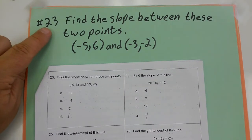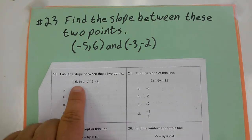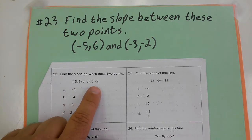Number 23 from the PERT practice test says find the slope between these two points: negative 5, 6, and negative 3, negative 2.